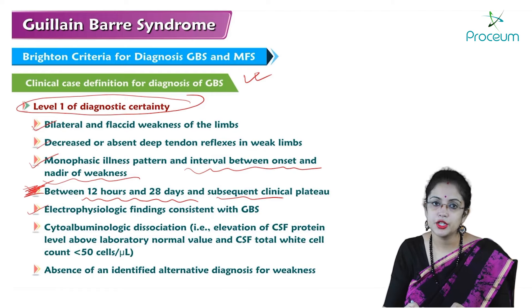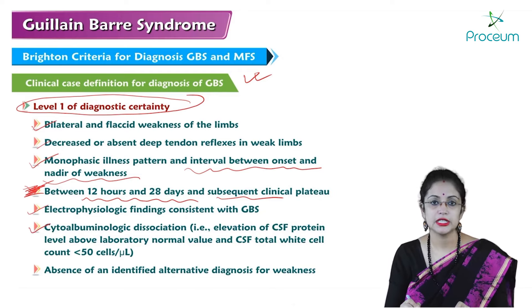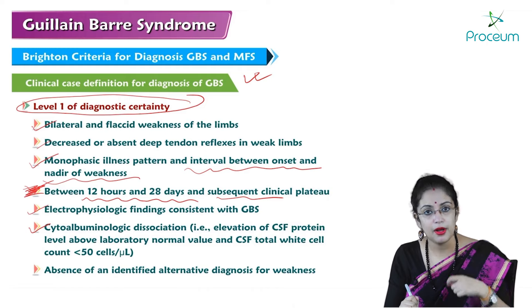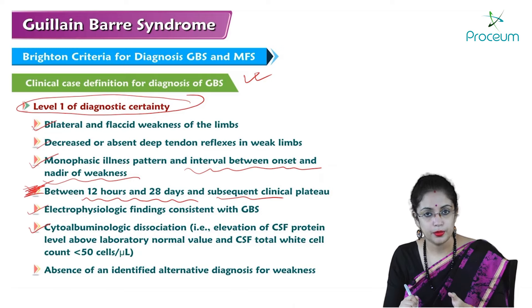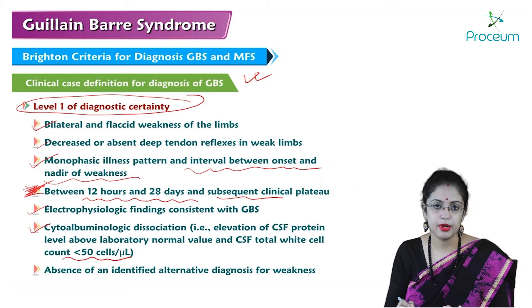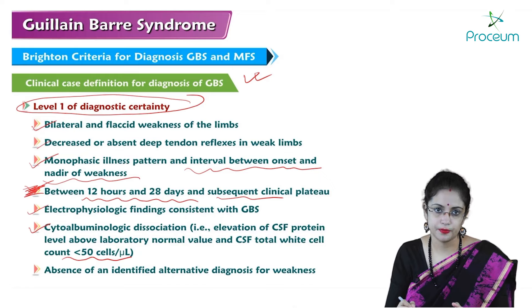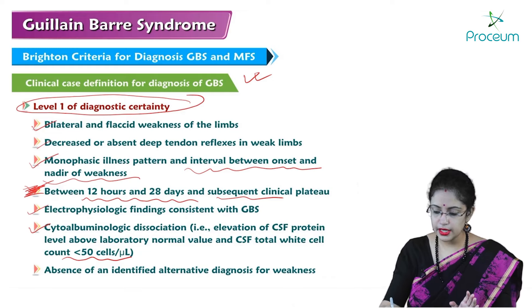There should also be cytoalbuminologic dissociation on CSF examination — meaning elevation of protein level above normal, but the CSF total white cell count will not rise proportionately and will be less than 50 cells per microliter. This is known as albuminocytologic dissociation. Finally, there should be absence of an identified alternative diagnosis for weakness.